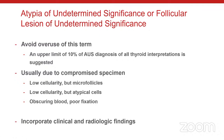Now comes the dreaded AUS, or FLUS. The Bethesda system is very clear: AUS and FLUS do not mean different things — it is not that you call AUS cytologically and FLUS architecturally. Use one term consistently throughout your institution for easier data collection and studies. We use AUS in our practice. It is very important, to keep cytopathology useful, to avoid overuse of this term. The Bethesda system sets an upper limit of 10%.